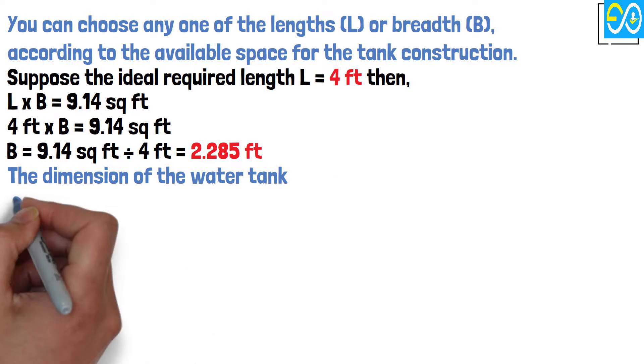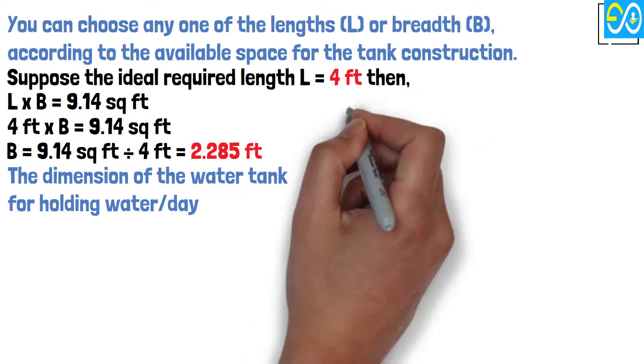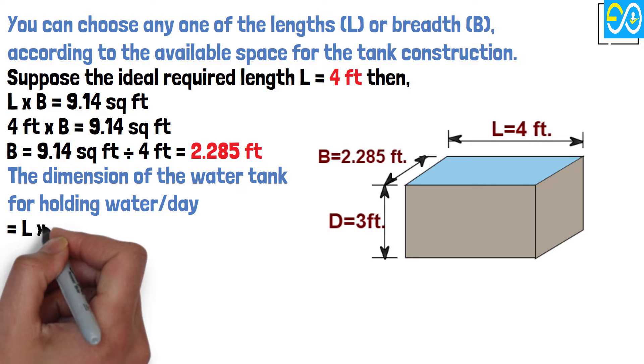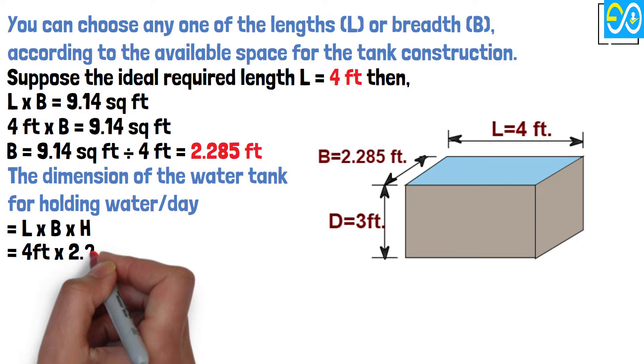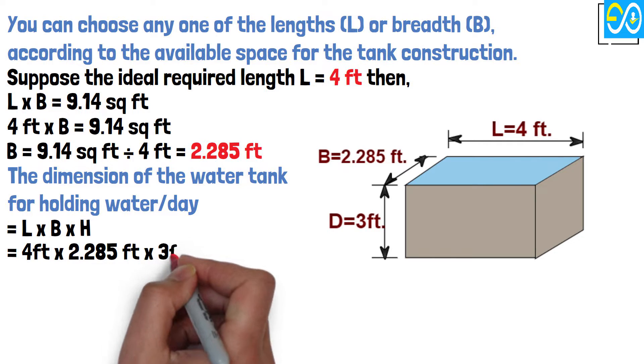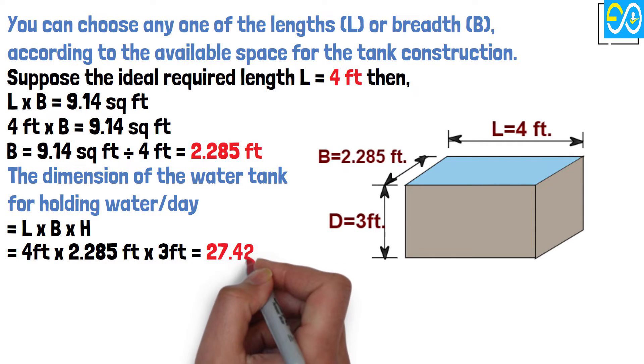The dimension of the water tank for holding water per day equals L times B times H, which equals 4 feet times 2.285 feet times 3 feet, equals 27.42 cubic feet.